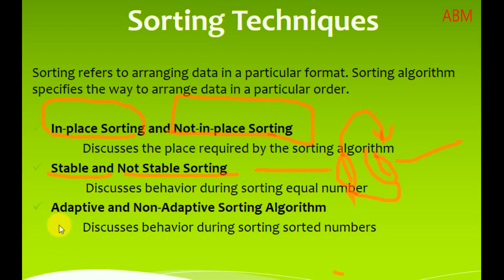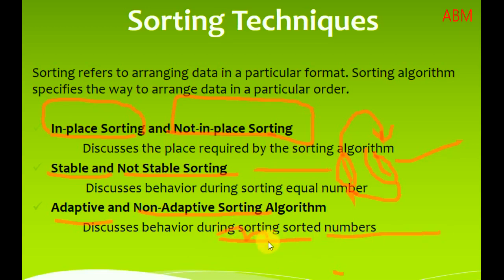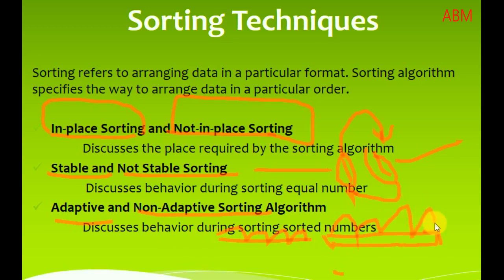The third category is adaptive versus non-adaptive. If an array has some elements which are already sorted, an adaptive algorithm will not waste time re-sorting those elements. A non-adaptive algorithm will sort those already-sorted elements again regardless.